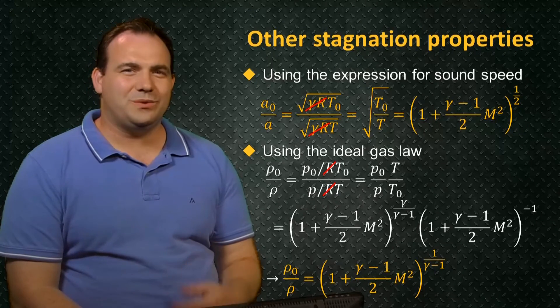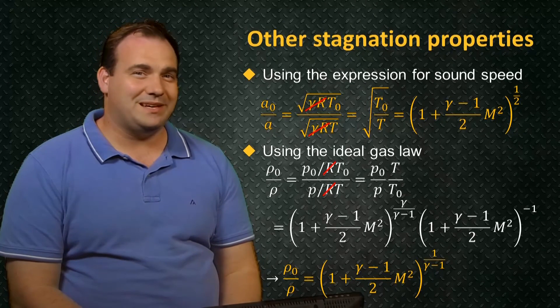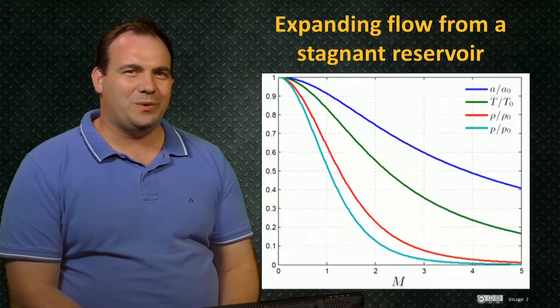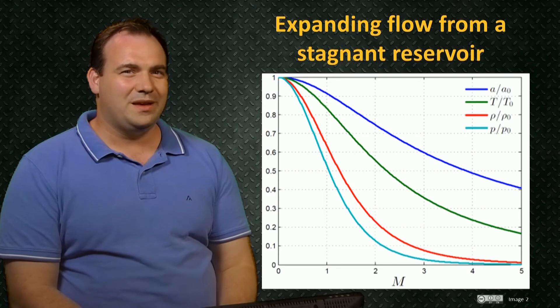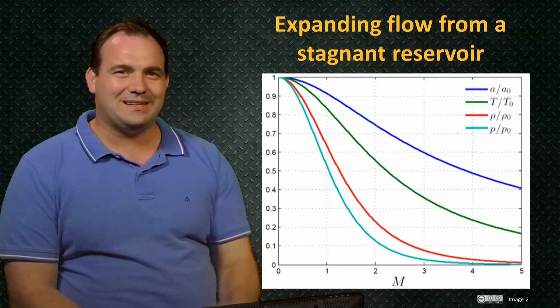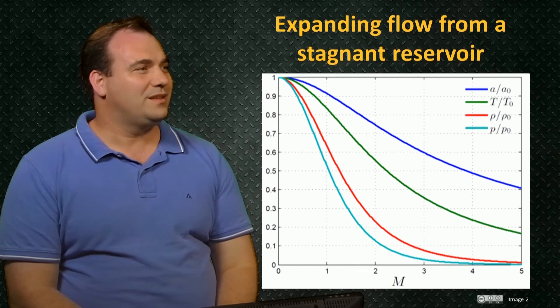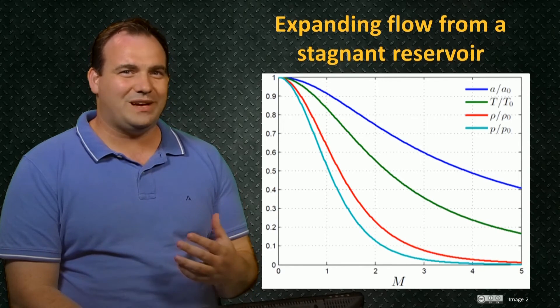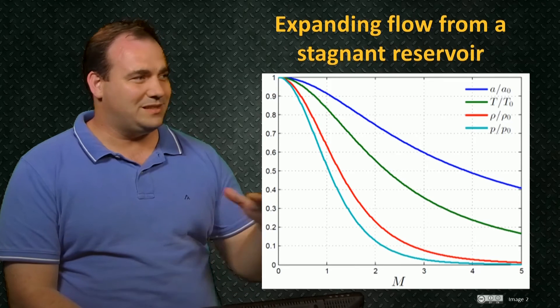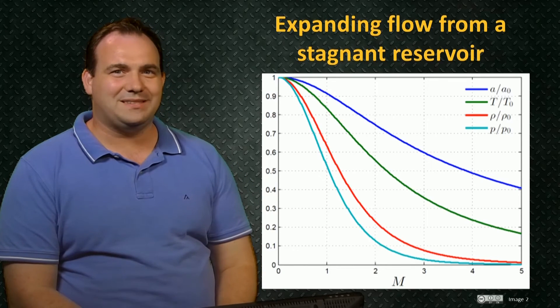We can also invert these expressions for stagnation quantities. To examine the situation where we have a high-pressure gas stored stagnant in a reservoir, which is then allowed to expand and accelerate through a nozzle. This plot shows how each quantity drops from its stagnation value as it's accelerated to the Mach number on the x-axis.